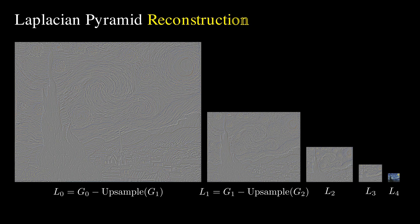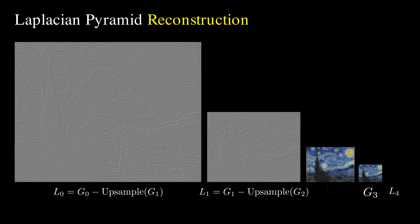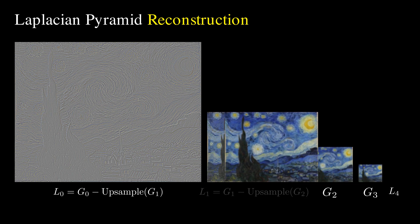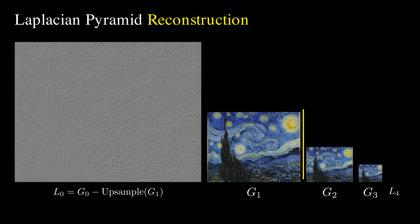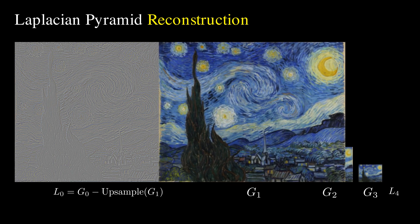With the Laplacian pyramid, we can perfectly reconstruct the original high-resolution image. We start with the lowest-resolution image, upsample it, and add a residual image from the Laplacian pyramid. We then move on to the next level, upsample the image, and add back the residual. By the final step, we have restored all the frequency details across multiple levels, reconstructing the original input image perfectly.